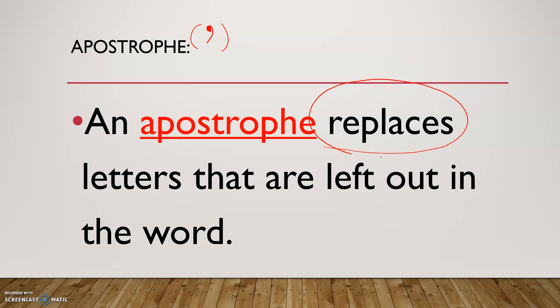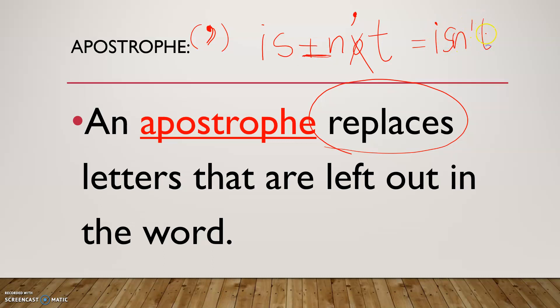An apostrophe replaces letters that are left out in the words. 'Replace' is one of our vocabulary words — when we cross or remove something and put something new in its place. So the apostrophe stands in for the letters we crossed. Remember, a contraction is one word, so don't leave a space between the two parts when you write it. Is plus not becomes isn't — it becomes one short word.